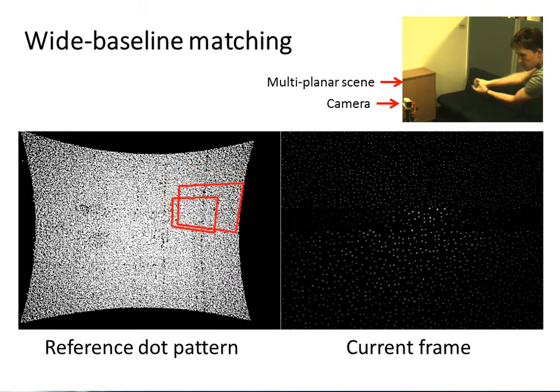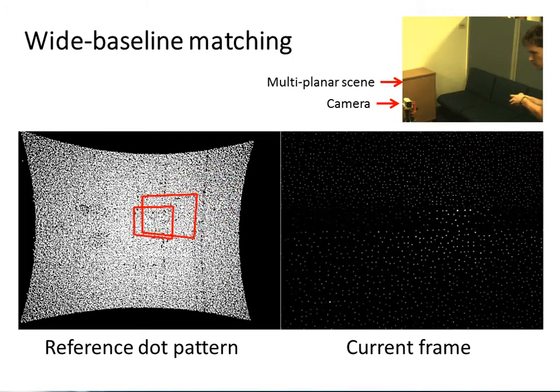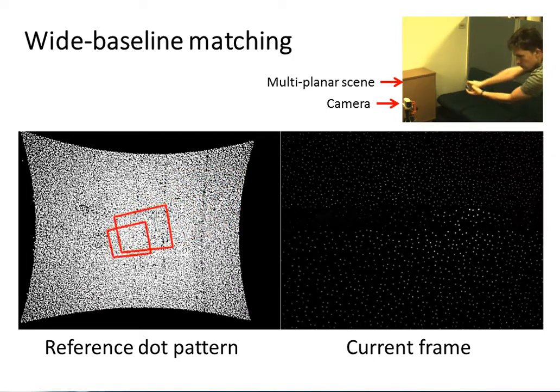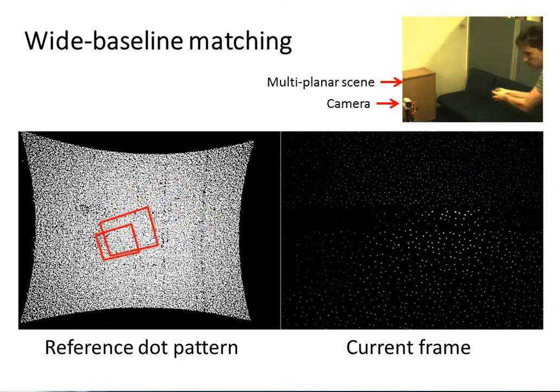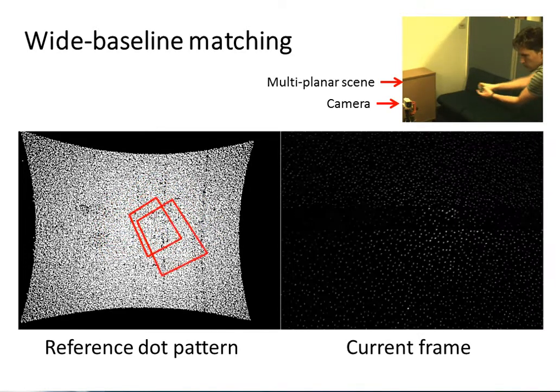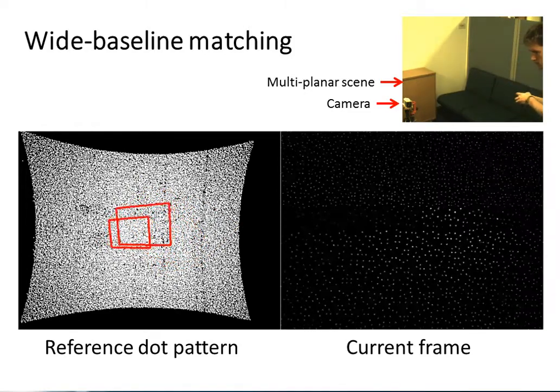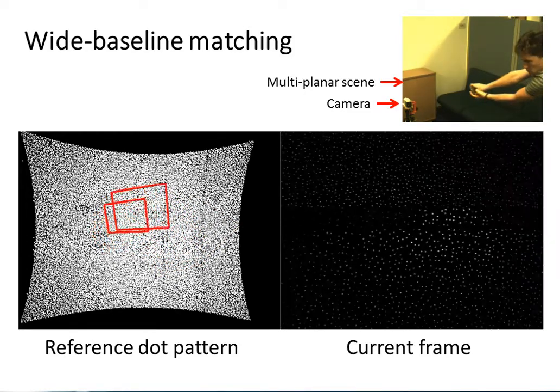At runtime, we need to obtain correspondences between the current camera view and the emitter dot pattern reference. Once correspondences have been obtained between the calibrated camera and the emitter, we can RANSAC for the essential matrix using standard techniques and the problem is reduced to structure from motion.